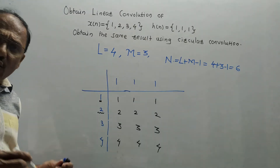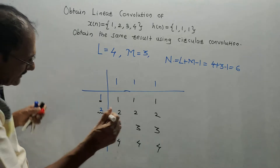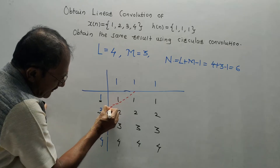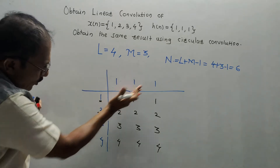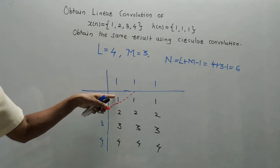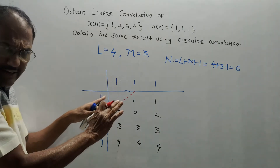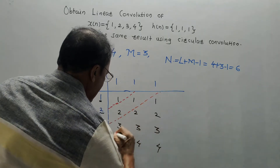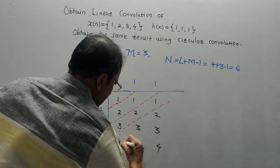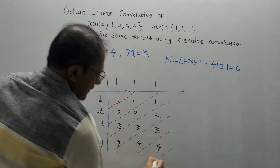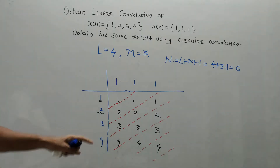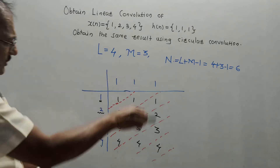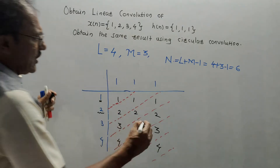Next, you need to draw diagonal lines. The rule is that inside the first diagonal line, there must be only one value. Starting with that, draw parallel diagonal lines. The first diagonal contains only the value 1, and then you continue marking parallel diagonals across the table.